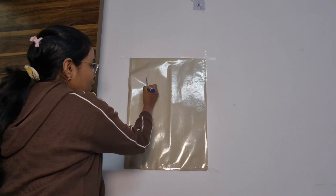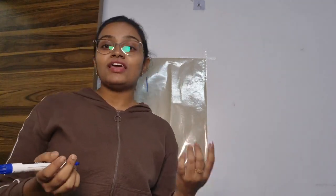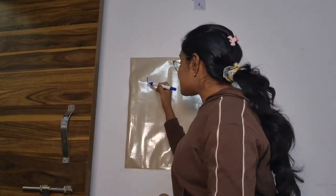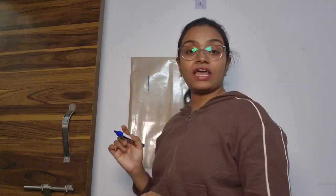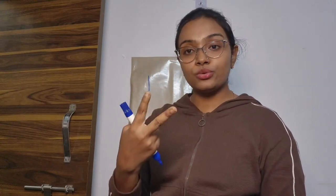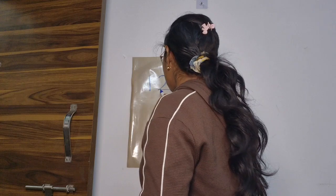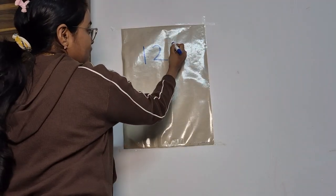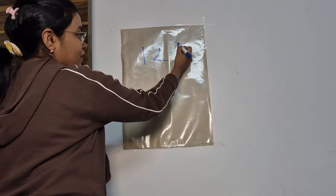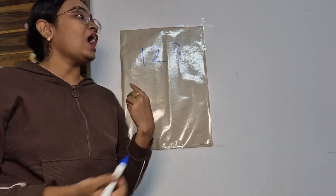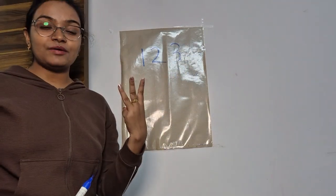One stroke down makes our number one. Only one standing line makes the number one. Now I'll write number two. One half circle, sleeping line makes our number two. Right curve, then another right curve. Half circle, half circle makes our number three.